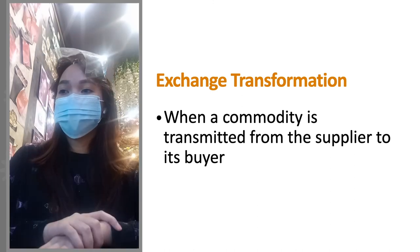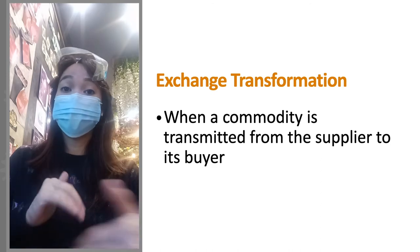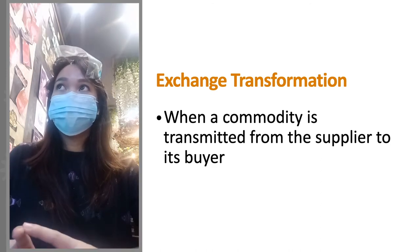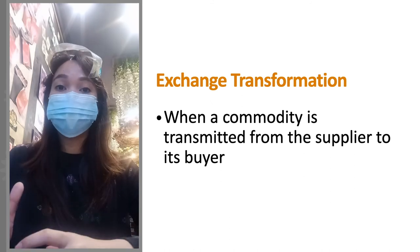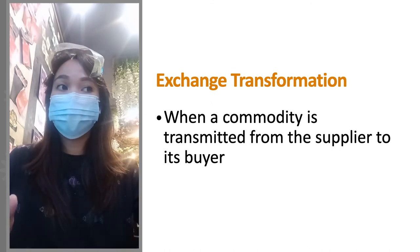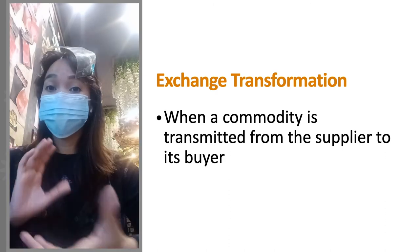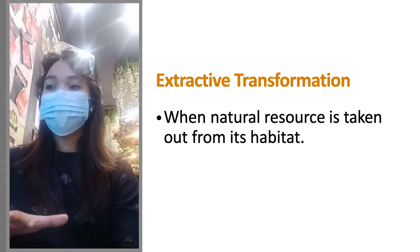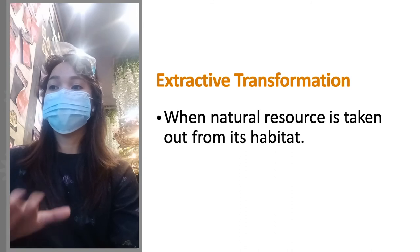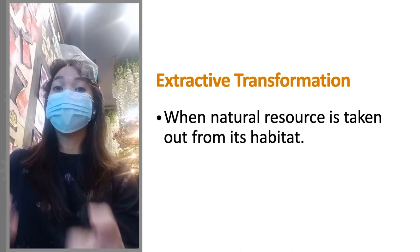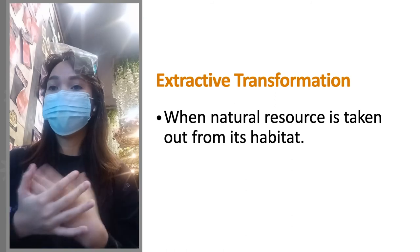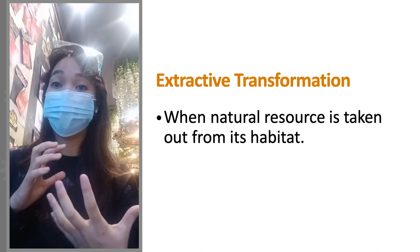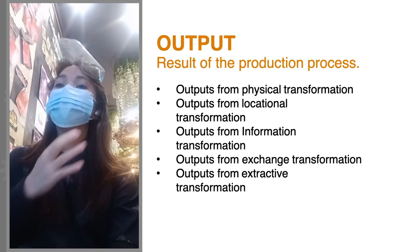Exchange transformation is when a commodity is transmitted from one party to another — from the seller to a courier, then delivered to the customer. There is an exchange happening in that process. Extractive transformation is when natural resources are taken from their natural habitat or environment for use in production.